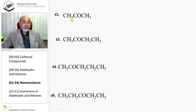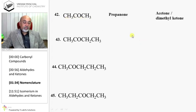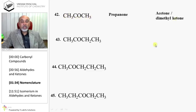This is a ketone. Total three carbons — propanone. Common name is acetone, or dimethylketone. The C=O is the ketone, and there are two methyl groups attached to it, so it is dimethylketone.